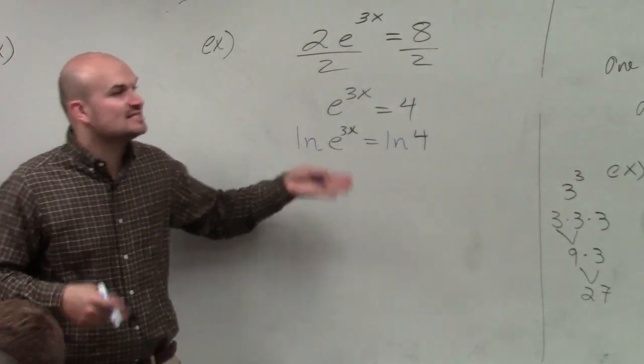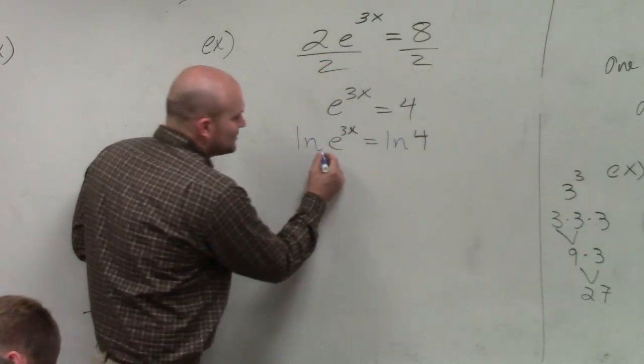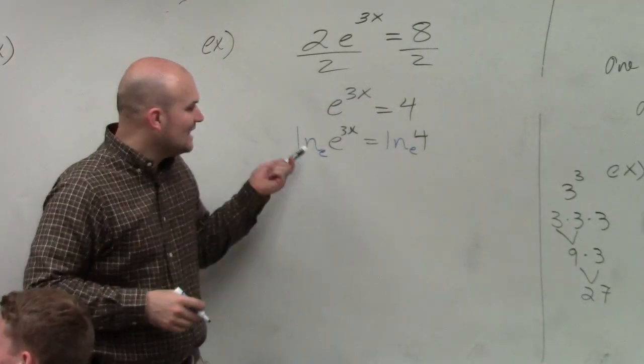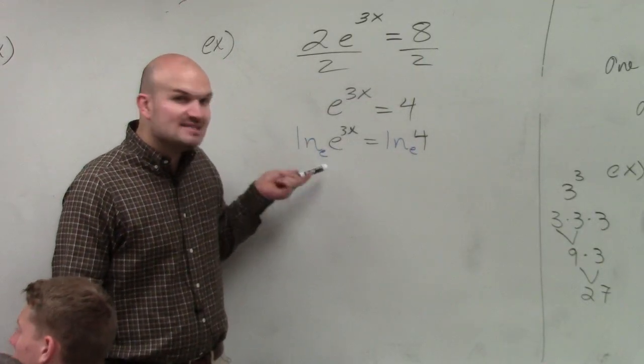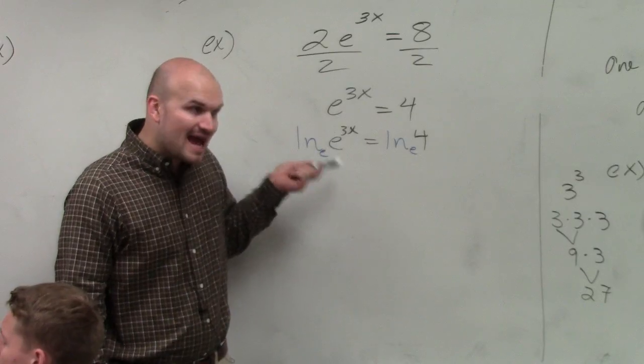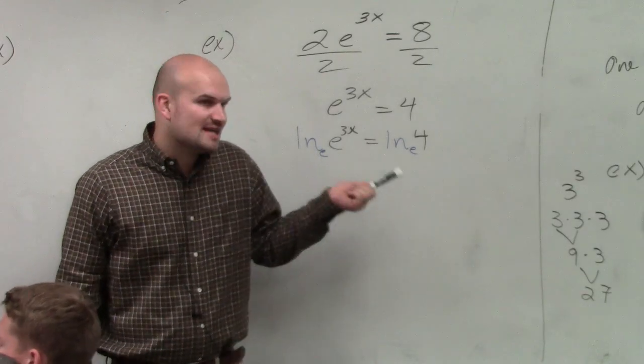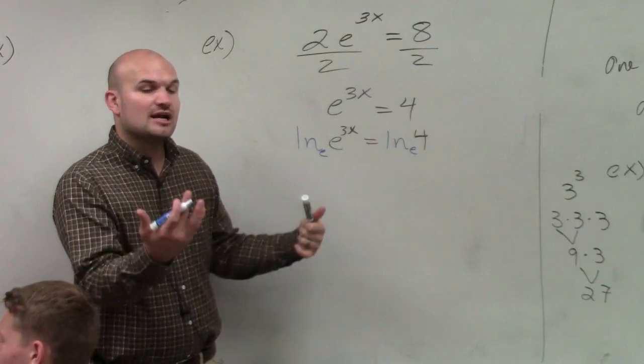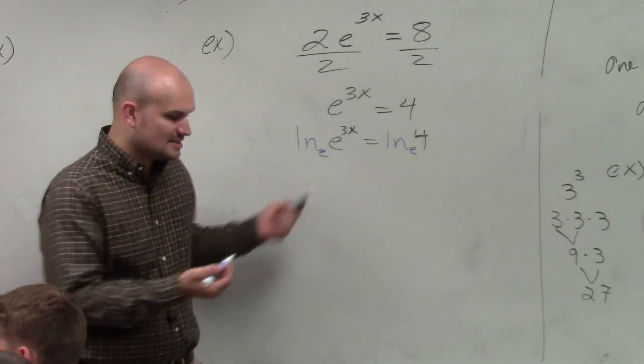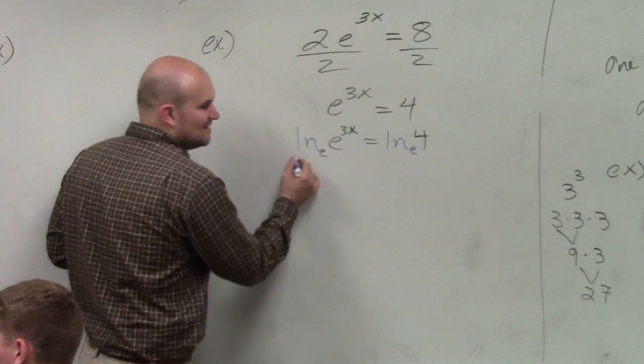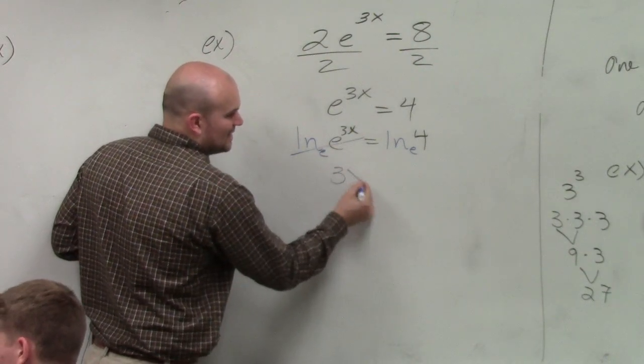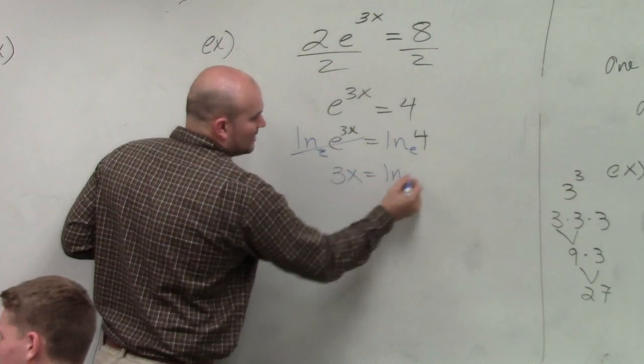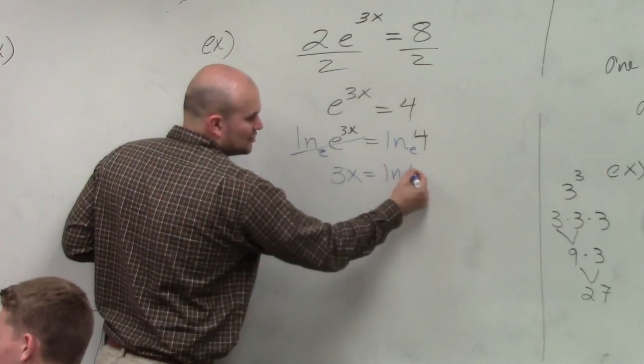We represent it as ln instead of log. Every single time you see ln, just notice that the ln has a base e. But instead of saying log base e, we write it as ln. But the process is the same. ln base e of e, which is just going to leave us with 3x, equals ln of 4.